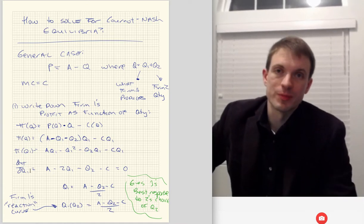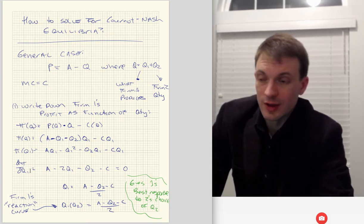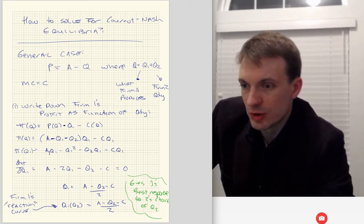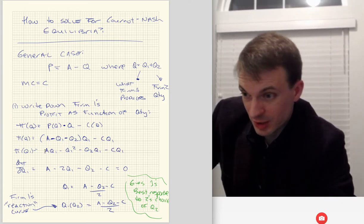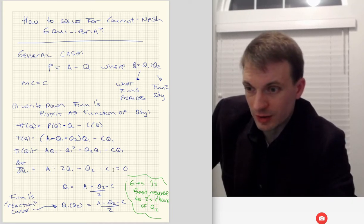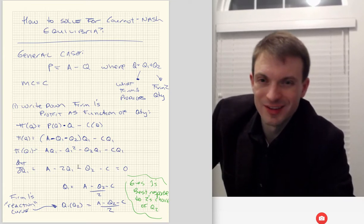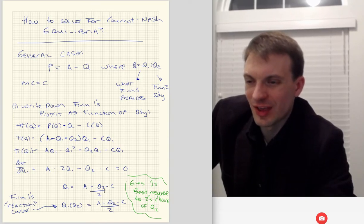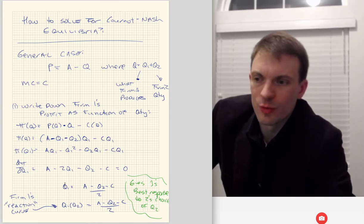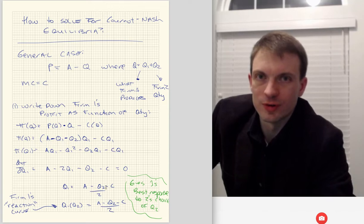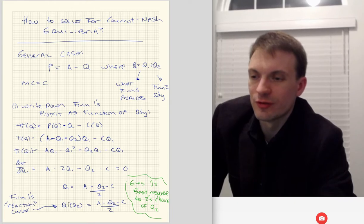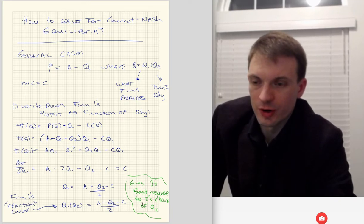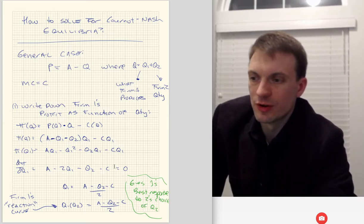The next thing we want to do is take the derivative with respect to Q1 — this accounts for the fact that firm 1 is maximizing their profit by choosing their quantity. Taking the derivative with respect to Q1 gives us A minus 2Q1 minus Q2 minus C equals zero. Solving for Q1: Q1 equals A minus Q2 minus C, over two. This is firm 1's reaction curve — firm 1's choice of Q1 as a function of what firm 2 has chosen.